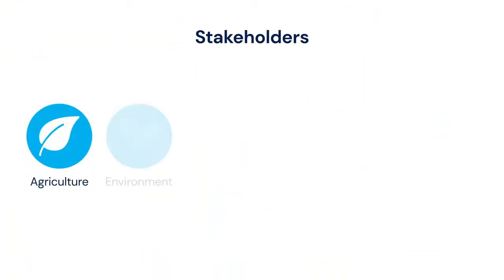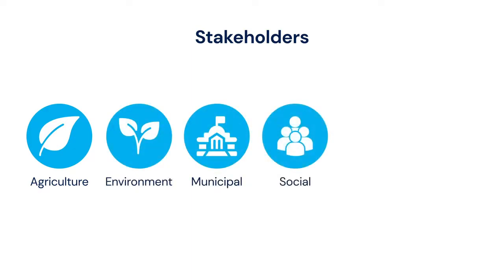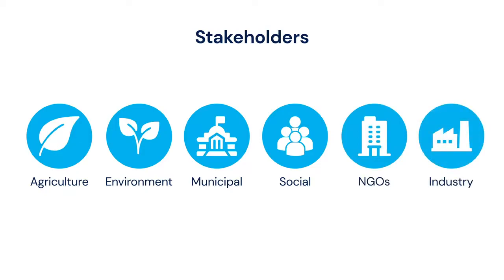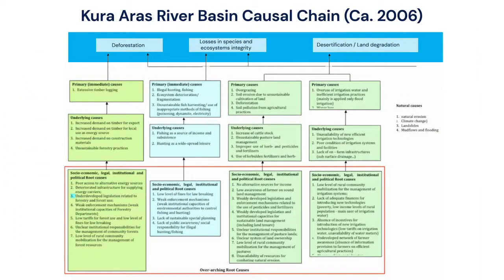In the TDA process, we're working together on empirical fact-based information, and the TDA SAP process begins by bringing together stakeholders from all of the different water sectors — from agriculture, environment, municipal waters, the social side, NGOs, civil society, and industry — all working together to address these transboundary issues, identify them, provide empirical information, and look at what the causes and effects are. We do this using a root cause or causal chain analysis.